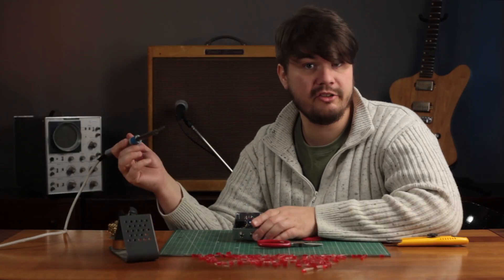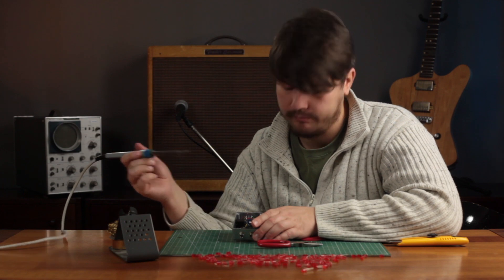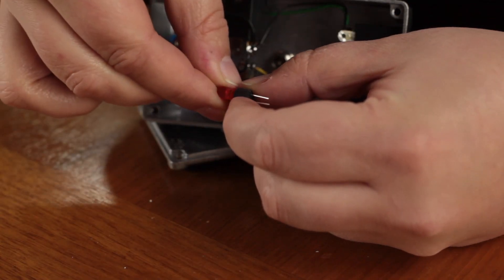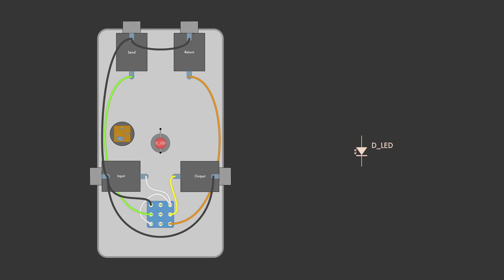Now we're going to solder the DC jack, LED, and resistor to the switch. First, stick the LED through the rubber plug of the LED mount. The LED has two different length leads — the longer one is the positive pin, and we'll solder on our 1K current-limiting resistor. On the other end of the resistor, we'll connect up the 9-volt wire from the DC jack.